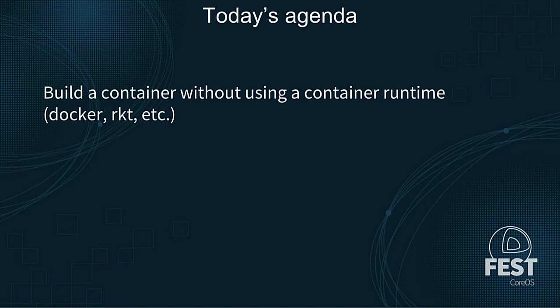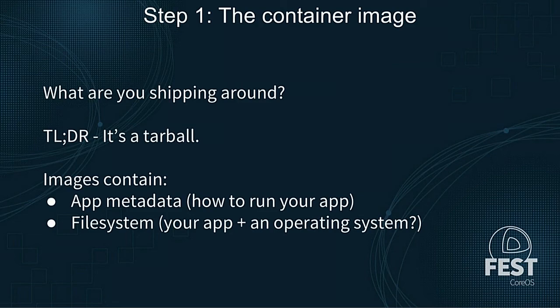We have to talk about what a container image is. When you issue a Docker pull or put an image URL in a Kubernetes manifest, what is that referring to? As my coworker Redbeard would say, it's a tarball. Containers are just tarballs - packaged up files. That tarball contains two main things: your app metadata - environment variables, what port it runs on, the path to NGINX to execute - and then it has your file system. For anybody who's built a container, you say 'FROM Ubuntu' or 'FROM Alpine', and then add your app cross-compiled for Linux.